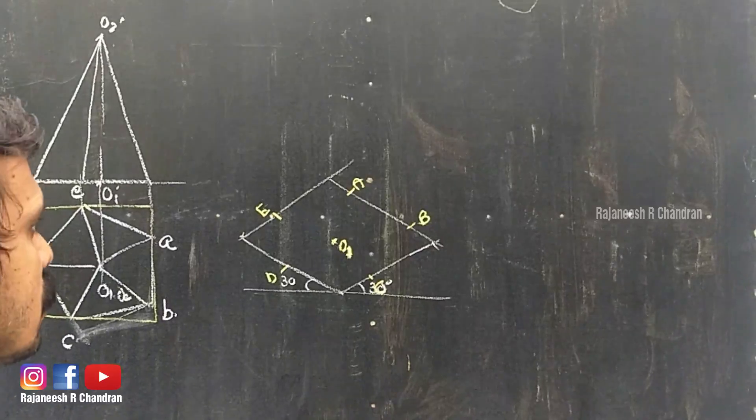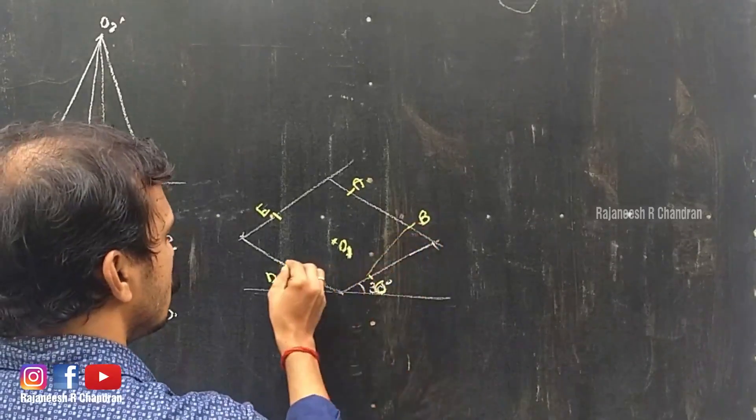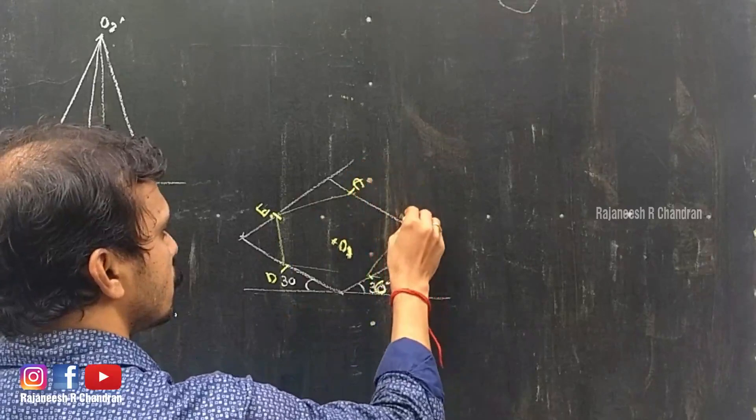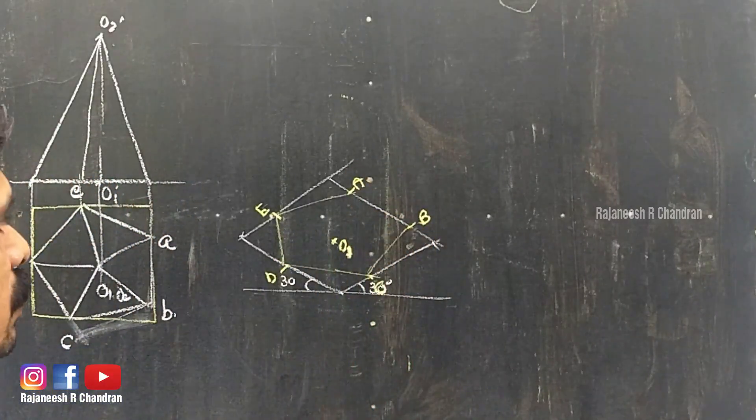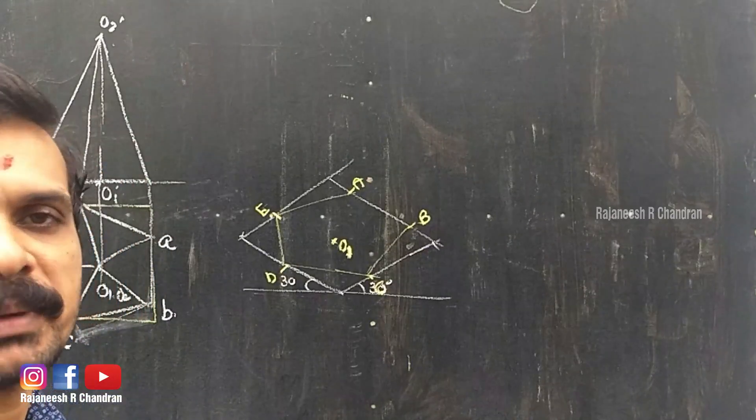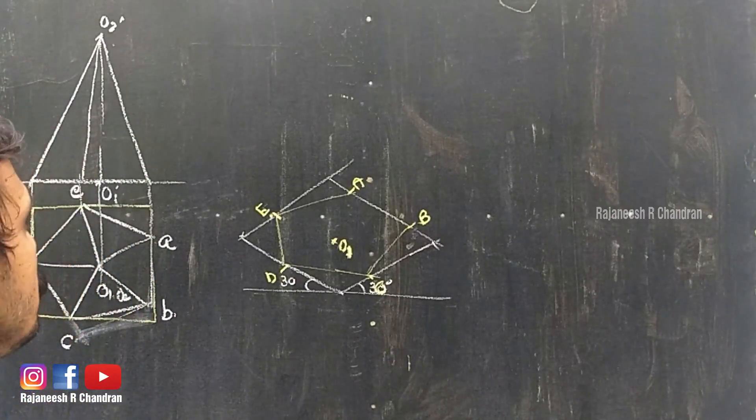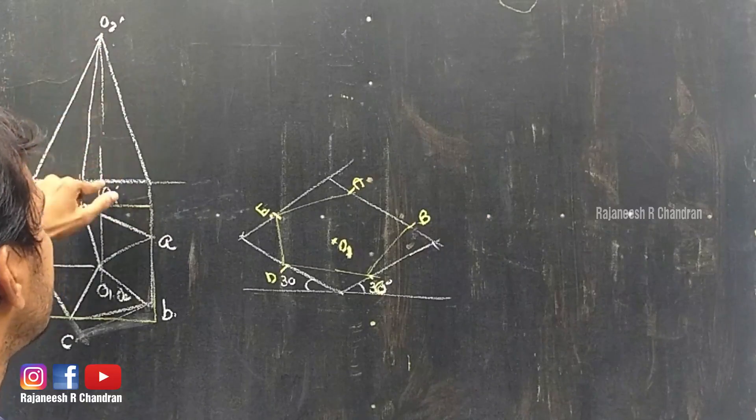Connect using TH pencil as thin lines. That is also completed. Now we know that it is a right pyramid. Pyramid means its apex O2 will be at a height of 60mm from O1.